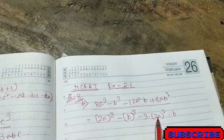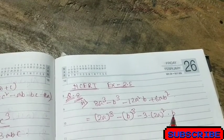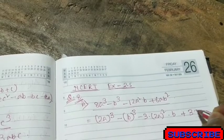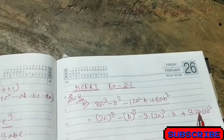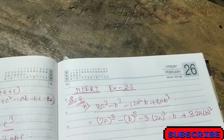That is 2a whole square means 4a square into 3, 12a square into b, plus 3 into a, that is 2a into b square. So it becomes 3 times 6ab square, so it is matching. That means...